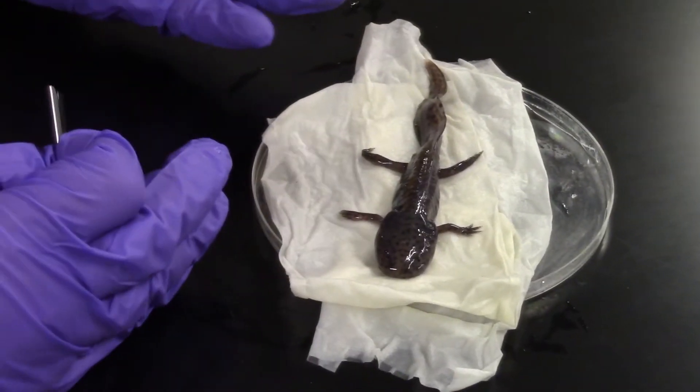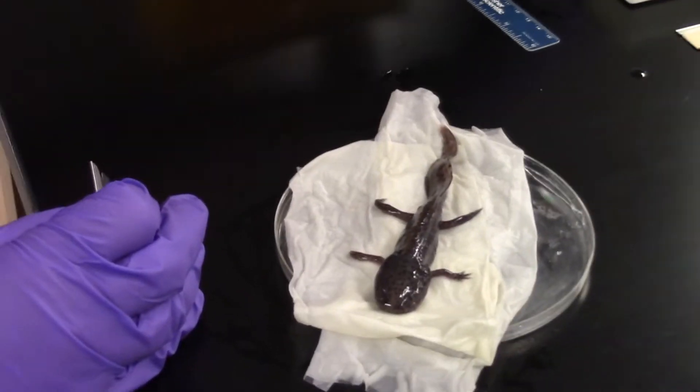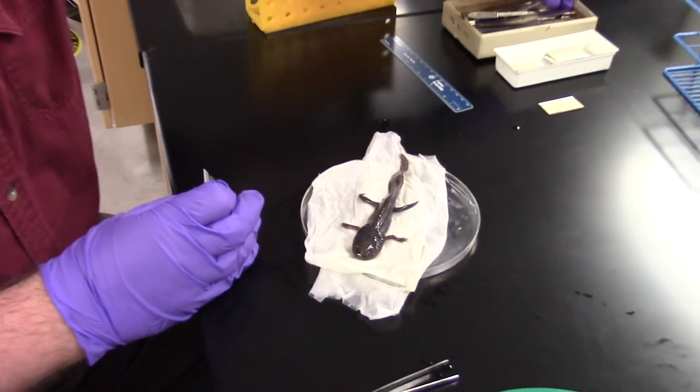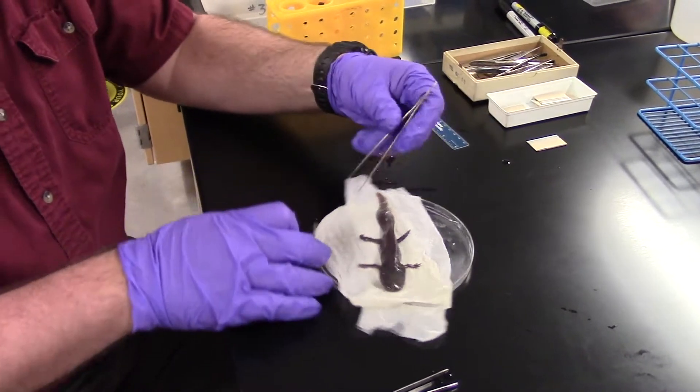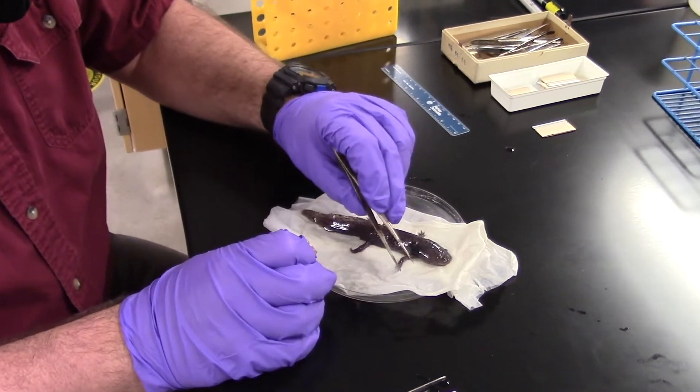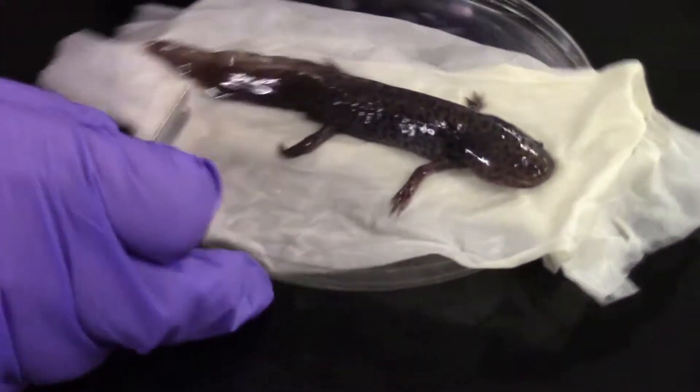So the animal has not moved since I picked it up. We know it's anesthetized. I can use some slightly sharper forceps to hold the limb in place. What I'm going to do is you can see all the little fingers right here, here's the wrist, here's the elbow. I'm just going to cut through the radius and ulna.